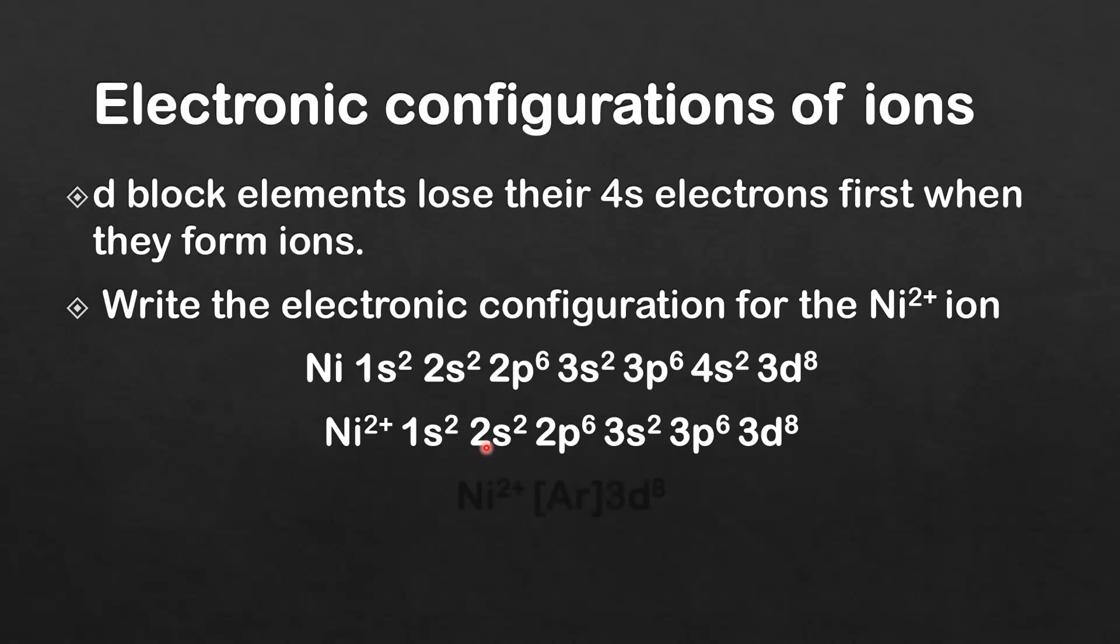So the electronic configuration for the 2 plus ion is 1s2, 2s2, 2p6, 3s2, 3p6, 3d8. So we've lost these 2 4s electrons first. And here's the abbreviated electronic configuration for the ion: square brackets AR, 3d8.